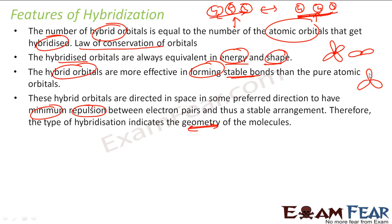In VSEPR theory, three balloons of the same shape and energy give a trigonal planar form. Similarly, in hybridization theory, hybrid orbitals of the same shape and energy arrange themselves in space such that they give minimum repulsion between electron pairs, and thus a stable arrangement. This is how hybridization indicates the geometry of the molecule.